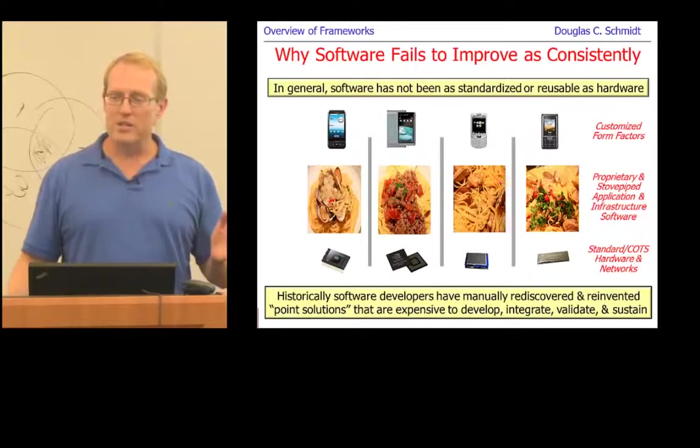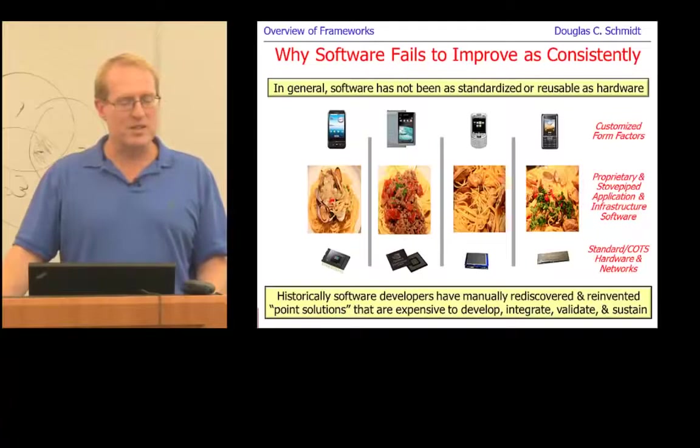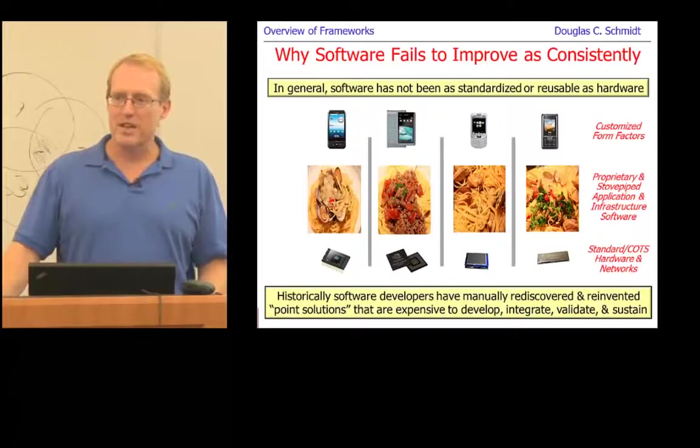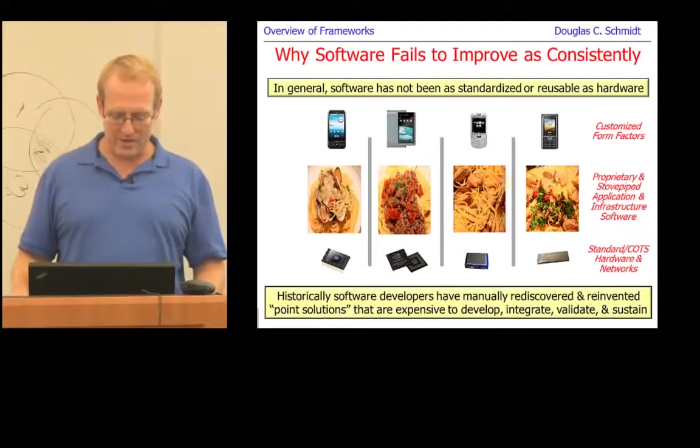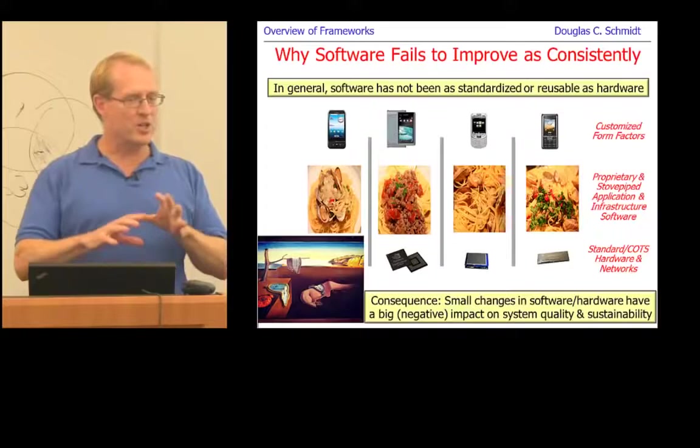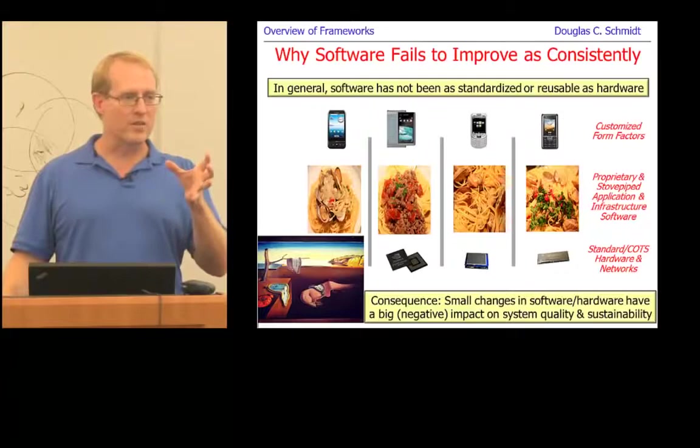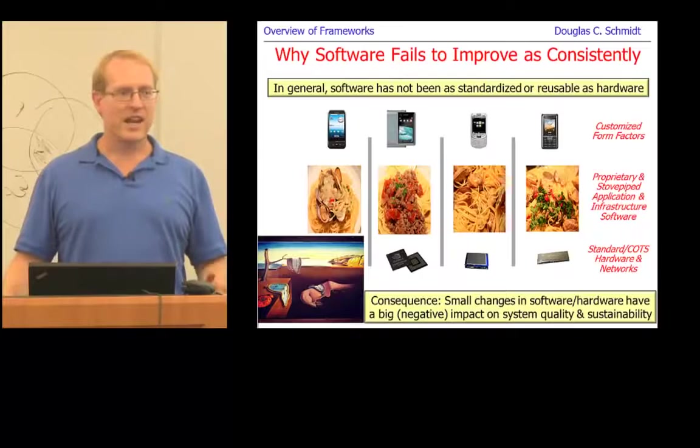Why was it bad to do hardware and software in such a customized way? Because you have to spend time manually rediscovering and redeveloping all this capability, then sustaining it across all different hardware variations, which very quickly becomes out of control. Whenever the hardware changes, whenever requirements change, a lot of work has to be redone. Everything's written in a very tightly coupled, brittle way with security holes, performance issues, and portability problems — just vertical stovepipes of spaghetti code.